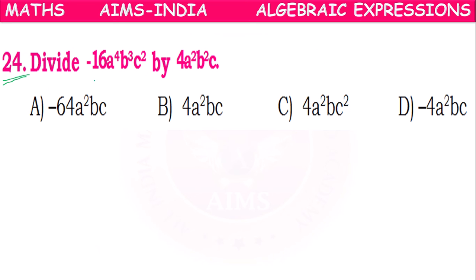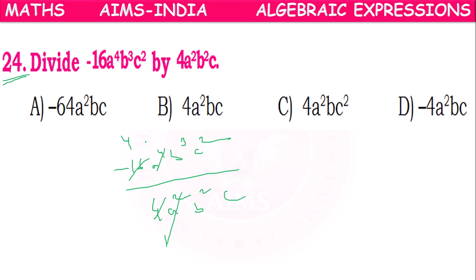Next: divide -16a⁴b³c² by 4a²b²c. 4 times 4 is 16 — cancel. Out of a⁴, a² will cancel, a² will remain. Out of b³, b² cancels, 1b will remain. 1c cancels, 1c will remain. So the answer is -4a²bc. Option D is the correct answer.